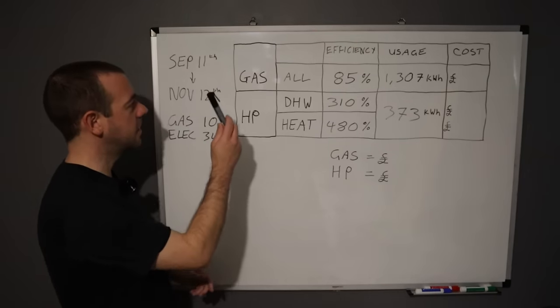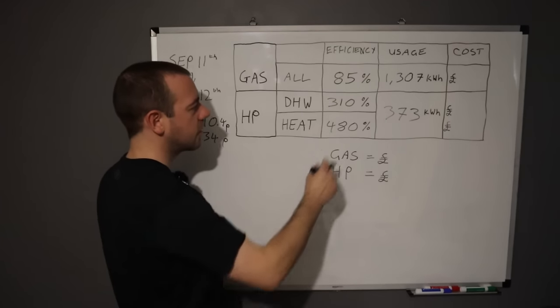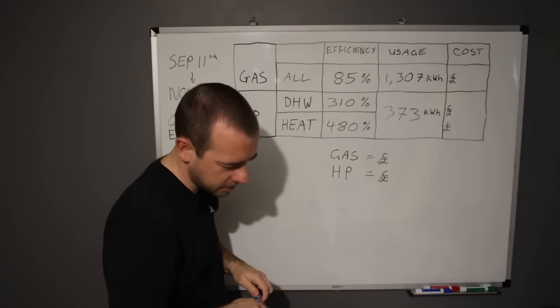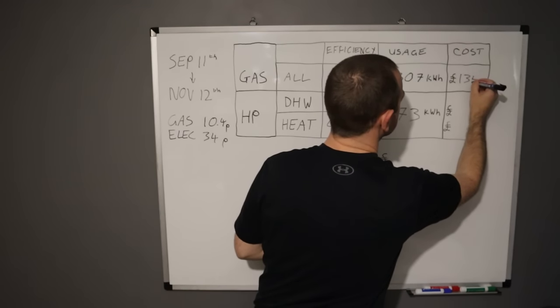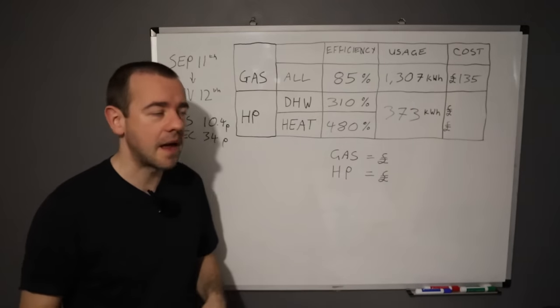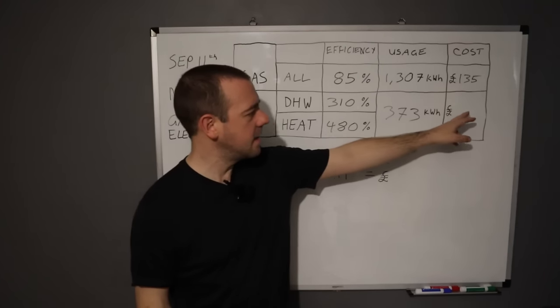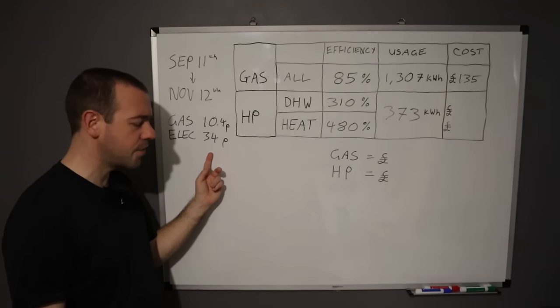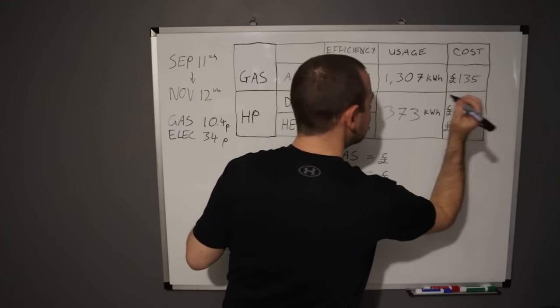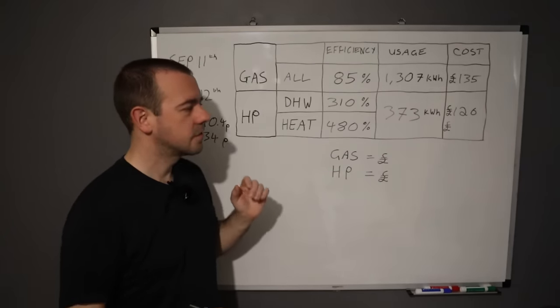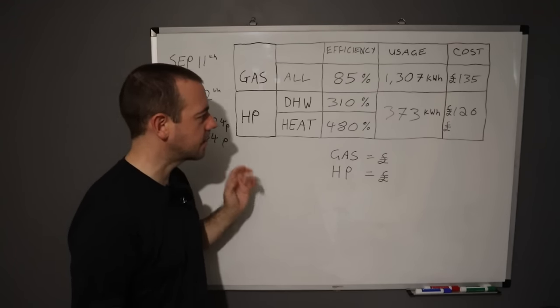Right, let's move on to these facts and figures again. Cost. In terms of the gas at 10.4 pence on the price cap, that would have cost us had we had a gas boiler this year, £135. I've rounded that down rather than put the pence in. Whereas the heat pump, again based on the price cap price of 34 pence, would have cost us £126.